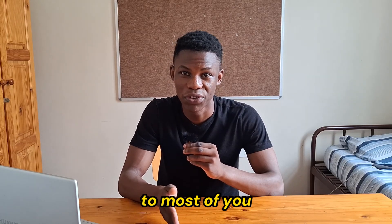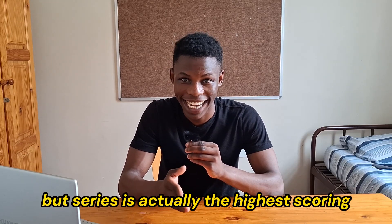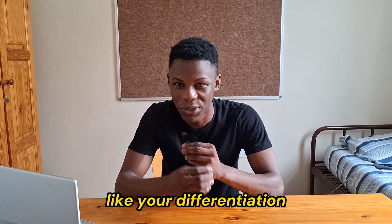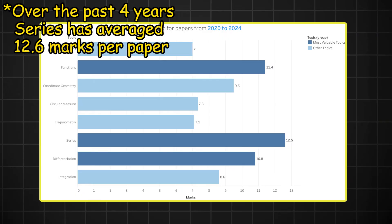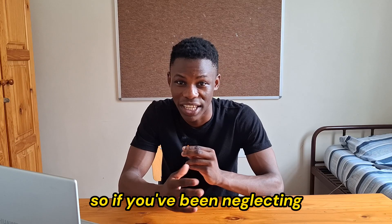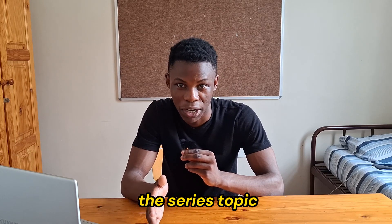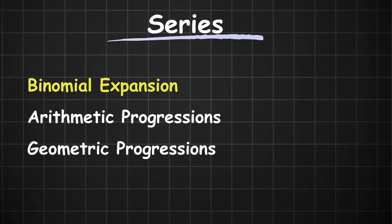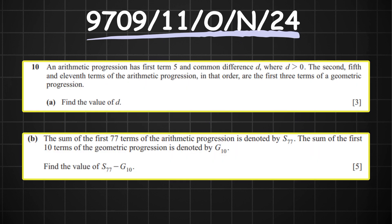This might come as a shock, but series is actually the highest scoring topic in all of P1 — ahead of bigger-name topics like differentiation, integration, and functions. Over the past two years, series has averaged 12.8 marks per paper. So if you've been neglecting the series topic, I strongly suggest you think again. It consists of three main questions: binomial expansion, arithmetic progressions, and geometric progressions, and occasionally they combine AP and GP together into one monstrous question.